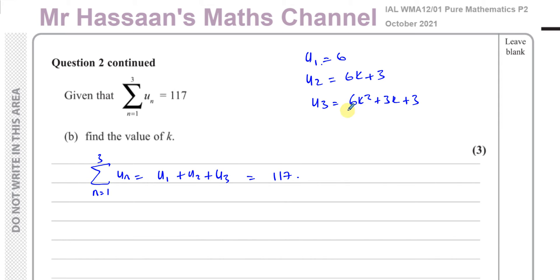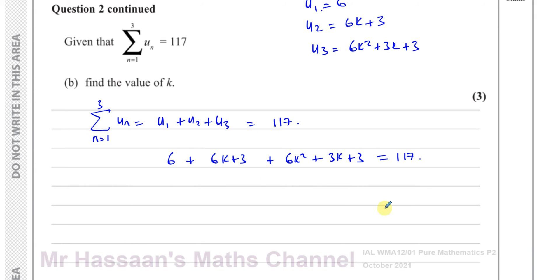So if I take these three terms, which is 6 plus (6K plus 3) plus (6K squared plus 3K plus 3), I'm going to get 117 as my answer. So I have an equation here which I can now solve for K.